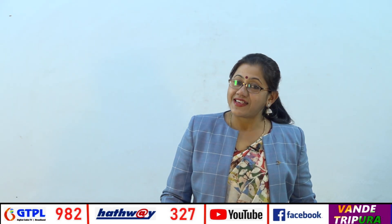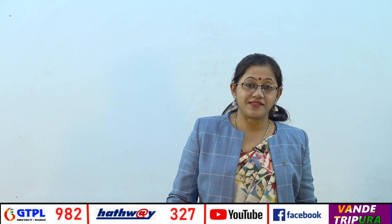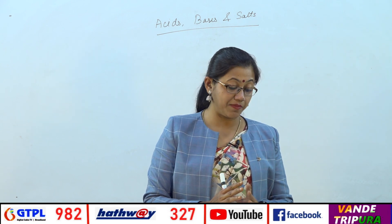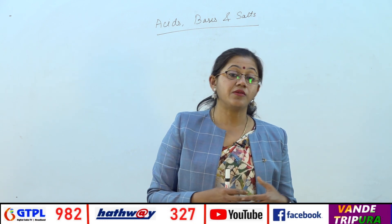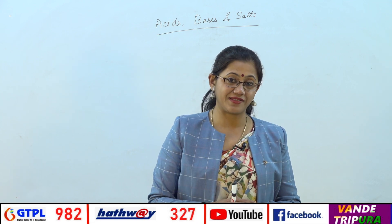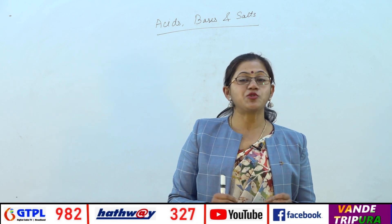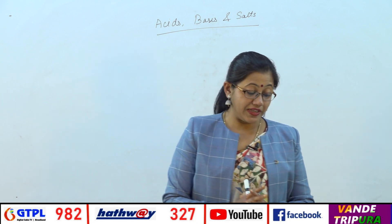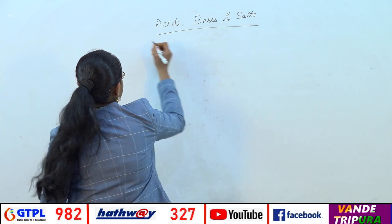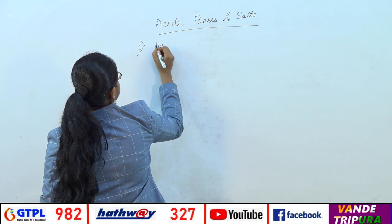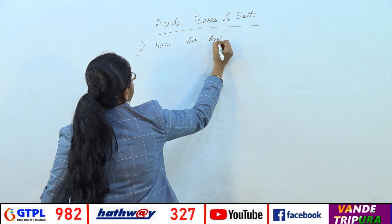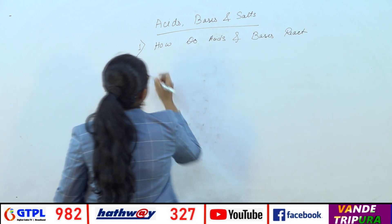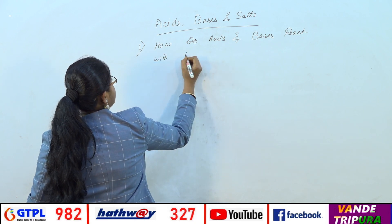Hello dear students, today is the second class of the chapter Acids, Bases and Salts. In the first class we studied the introduction of acids and bases — how acids and bases came about, and how we can indicate the presence of acids and bases using indicators. Today we will learn interesting facts about acids and bases. The first topic is: how do acids and bases react with metals?